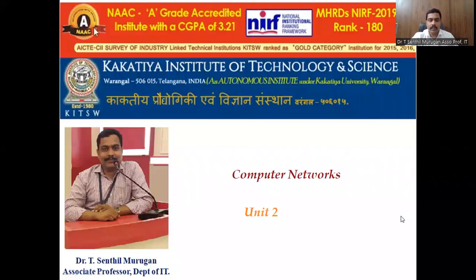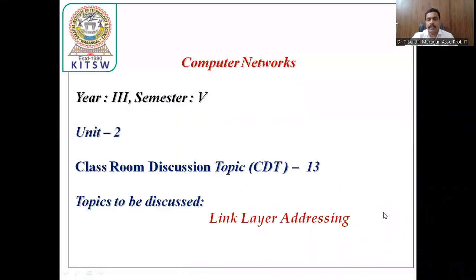In this video lecture, we are going to discuss about the unit 2 content: data link layer addressing. We know that the data link layer is used to get the packets from the network layer and convert them into frames. The frames will be transmitted to the physical layer. Framing is the primary responsibility of the data link layer, and frames are transmitted from node to node — that is node-to-node delivery.